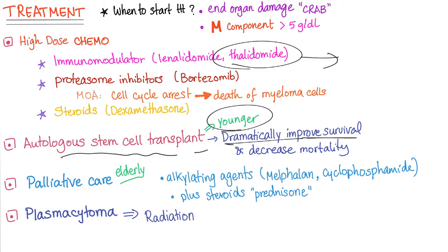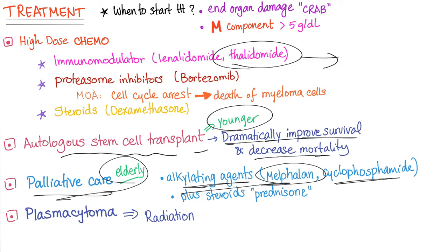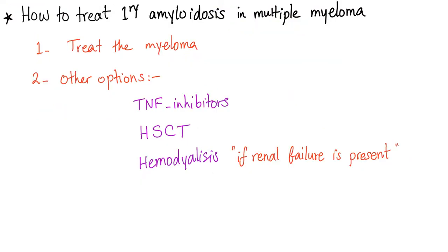Thalidomide has a very famous story worth googling. Autologous stem cell transplant is for younger patients and dramatically improves survival. Palliative care for the elderly uses alkylating agents such as melphalan and cyclophosphamide with prednisone added. In palliative care the steroid of choice is prednisone; in high-dose chemo it is dexamethasone. Plasmacytomas are local and can be radiated. For primary amyloidosis in multiple myeloma, treating the myeloma usually resolves it; other options include TNF inhibitors, hematopoietic stem cell transplant, and dialysis.